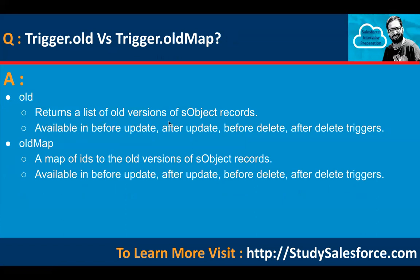Trigger.old versus Trigger.oldMap: trigger.old returns a list of old versions of sObject records, available in before update, after update, before delete, and after delete triggers. In an insert there is no data in trigger.old because there is only a new version. In an update, trigger.old holds the old values and trigger.new holds the new values. Trigger.oldMap is a map of IDs to the old version of sObject records, available in before update, after update, before delete, and after delete triggers.